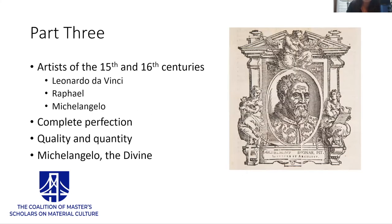The Lives culminates in part three with the biographies of artists of the late 15th and early 16th centuries, including such recognizable names as Leonardo da Vinci, Raphael, and Michelangelo. These are the artists, according to Vasari, who reached complete perfection in their work. Interestingly, Vasari praises these artists for being able to produce works not only in great quality, but in quantity as well — which seems perfectly logical given that Vasari's own workshop was known to produce many works very efficiently. The hero of Vasari's text overall is Michelangelo Buonarroti, whom Vasari deems the divine, the greatest in all three arts at the same time.